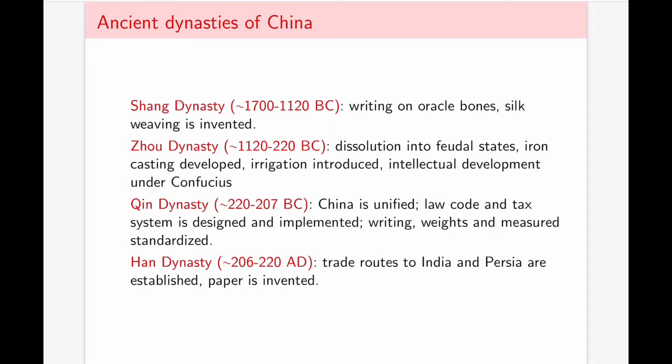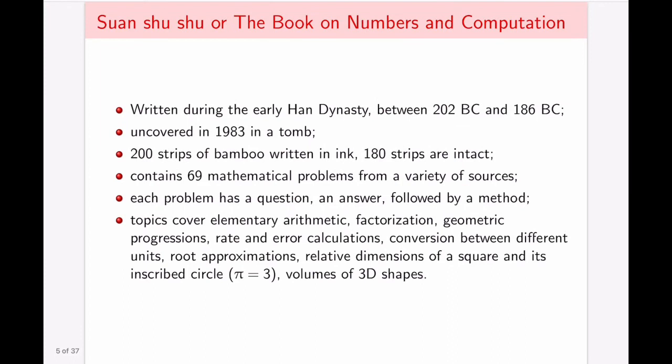Let's take a look at some of the mathematical works that we actually have copies of today. The first one we're going to talk about is the Book of Numbers and Computation, written during the early Han Dynasty, so somewhere between minus 200 BC, and uncovered in 1983. It is extensive. It's 200 strips of bamboo written in ink, 180 of which are intact and fully legible. It contains 69 mathematical problems from a variety of sources in terms of context, so geometry, algebra, and so on.